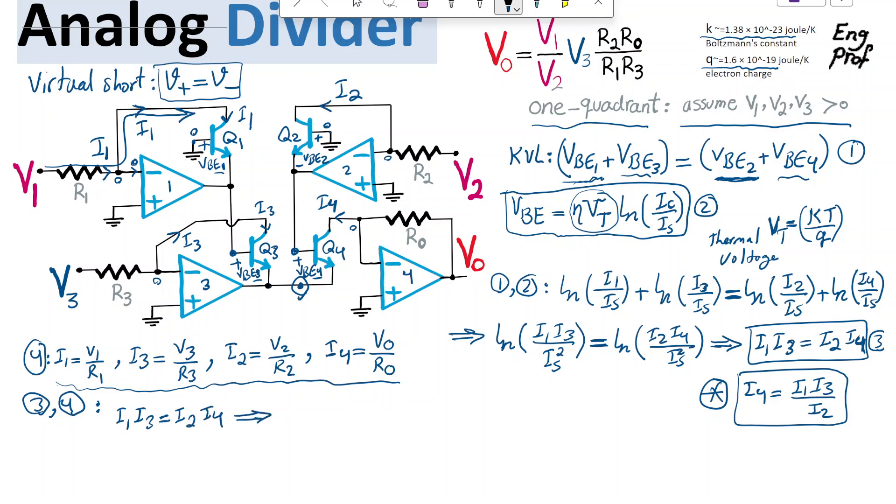so I get V1 over R1. That's the substitution for I1. For I3,